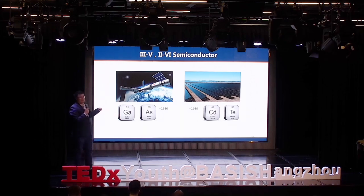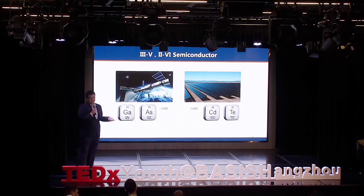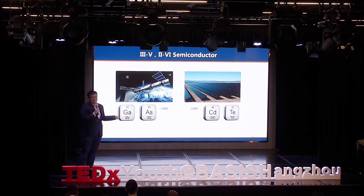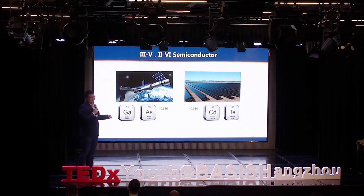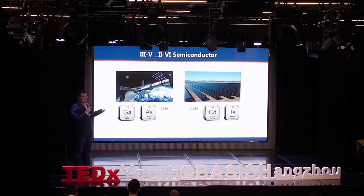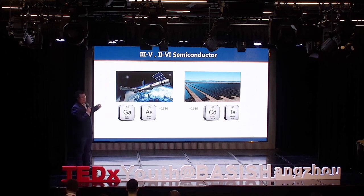Then they developed a lot, and started to find double-component semiconductors. First is gallium arsenide. This is a very perfect material — it has the highest power conversion efficiency, but the cost is very high, a thousand times more than silicon. So nobody will use that, except those with a lot of money — the spaceship. Because they have a lot of money and the energy efficiency outweighs the cost. You can see gallium arsenide solar cells on spaceships like Shenzhou.